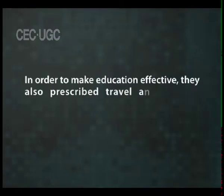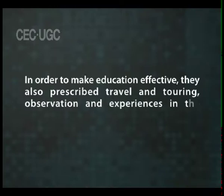The social realists were against bookish knowledge and encouraged education that was practical in nature. The believers of social realism included the study of geography, arithmetic, law, diplomacy, history, dancing, exercises, etc. in their curriculum, since they believed that such subjects help in developing social qualities in the child. In order to make education effective, they also prescribed travel and touring, observation and experiences in the curriculum. The two main protagonists who advocated social realism were Michael de Montaigne and John Locke.